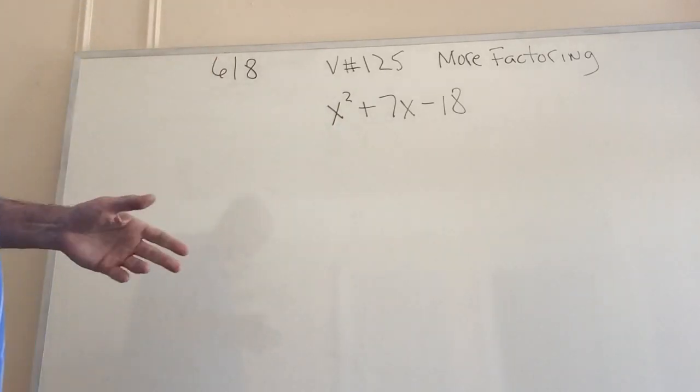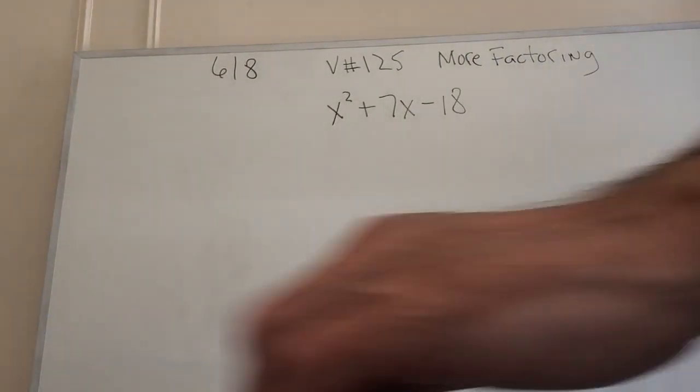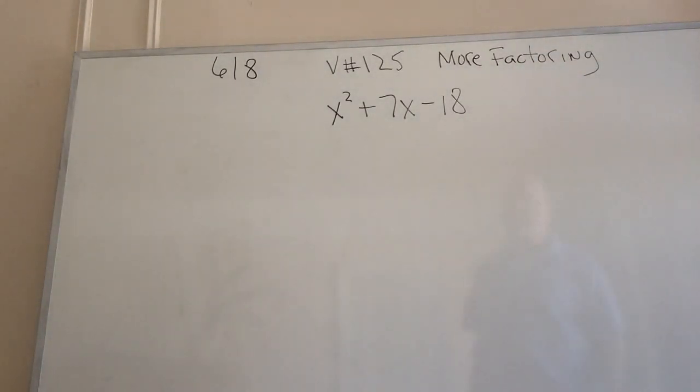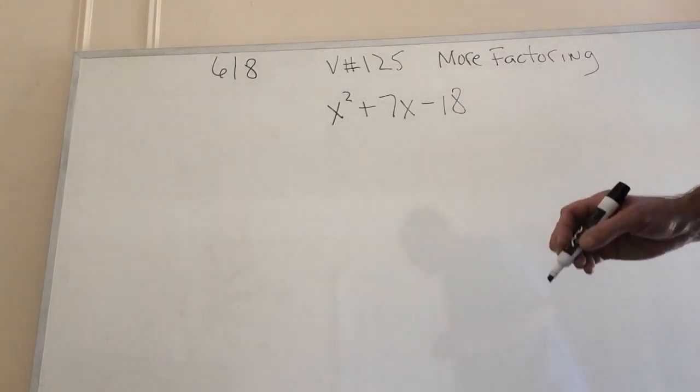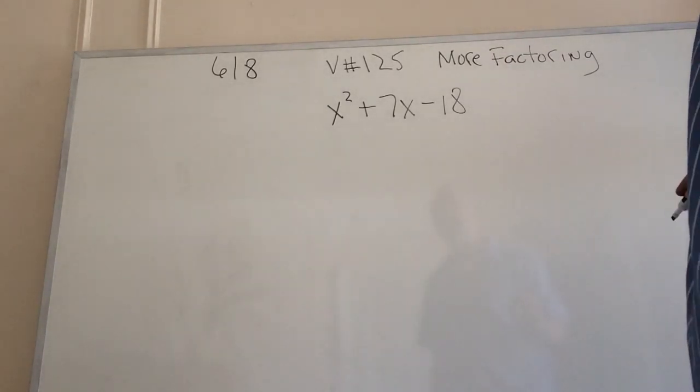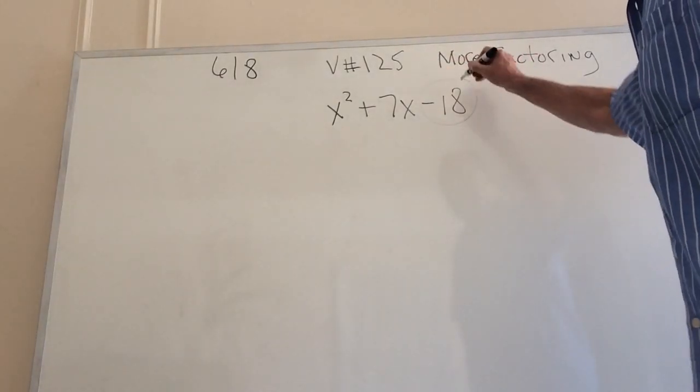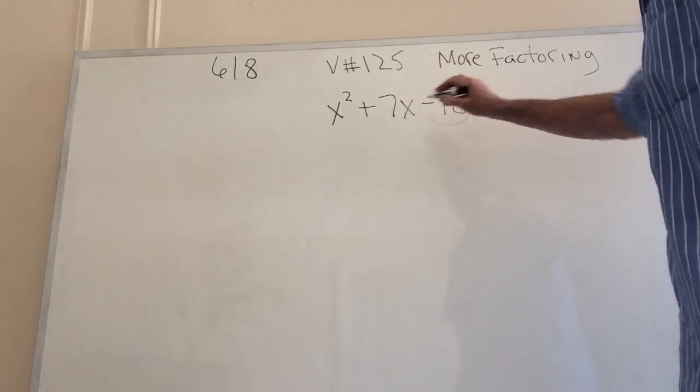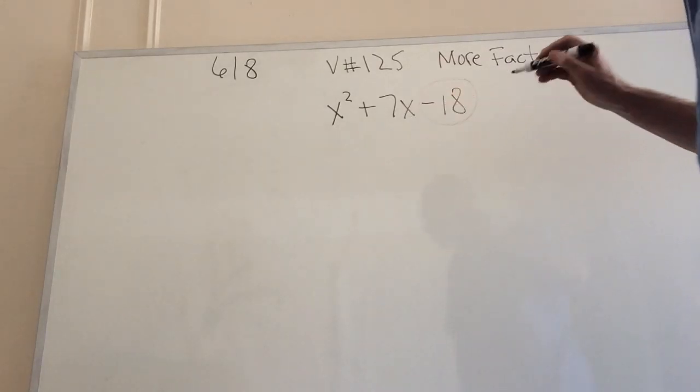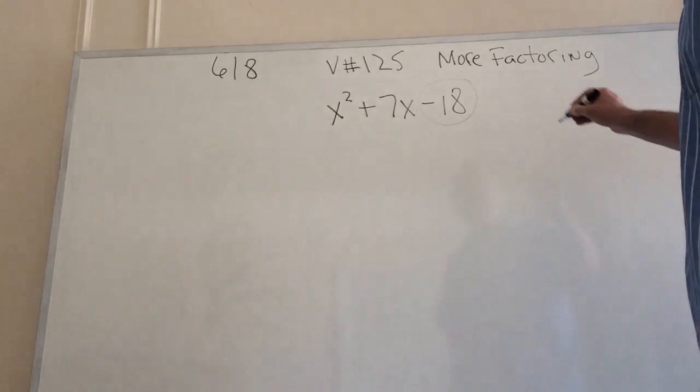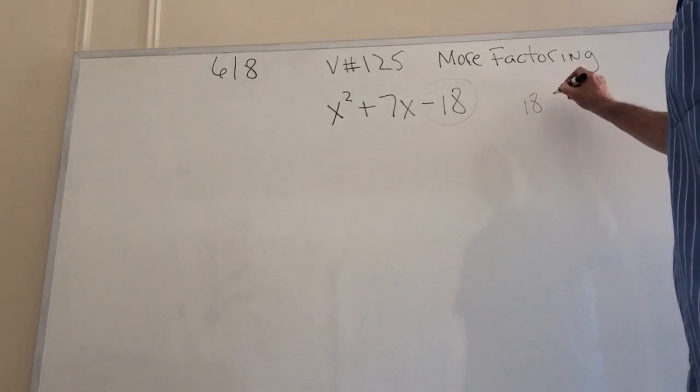So what numbers, I'll go over here so you can get a better look, what numbers multiply out to negative 18 but at the same time add up to positive 7. So one way to do it, I see the answer and I bet you lots of you do yourselves but say you don't see the answer. So what combination of numbers multiplies to negative 18 but adds up? So for it to be positive, the positive has to be bigger than the negative.